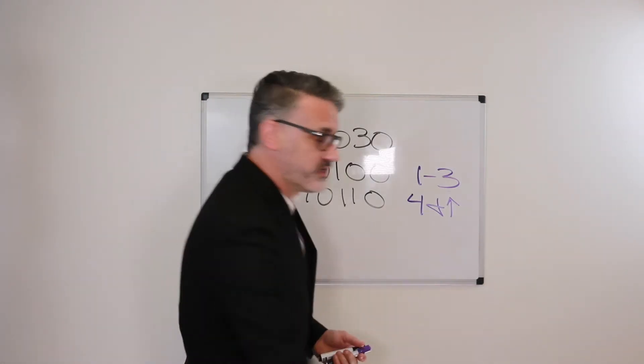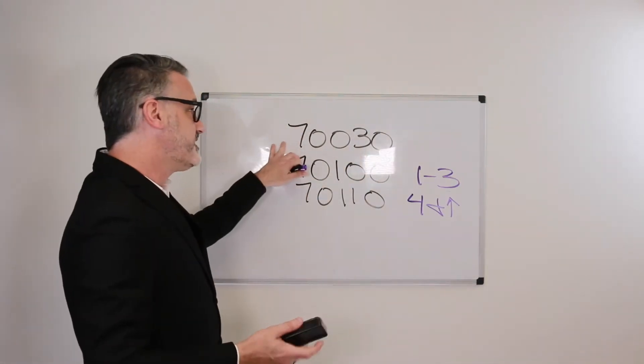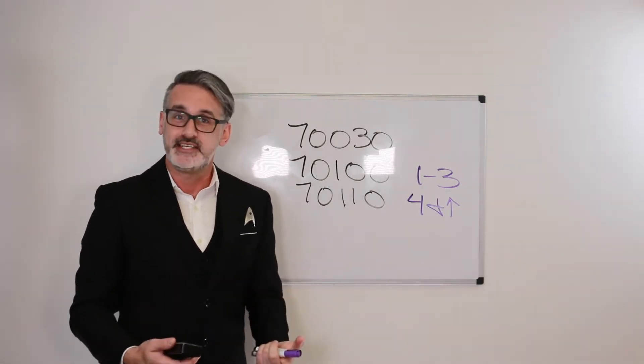So with the views, we are wanting to watch our numbers. And remember that if there's no number in the CPT code, like for example, 70030, then it's one view per one CPT code.